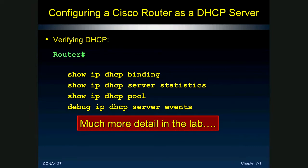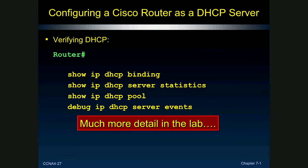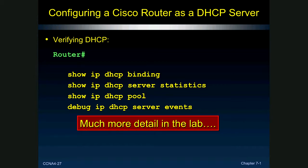To verify DHCP operation: 'show ip dhcp binding' shows all addresses currently assigned to clients; 'show ip dhcp server statistics' shows percentage-based stats on server operation; 'show ip dhcp pool' shows the actual address pool. The 'debug ip dhcp server events' command will print a line to the console each time a DHCP event occurs, but debug is dangerous — it consumes significant system resources and reduces router efficiency. Best practice: only enable debug for a limited time to troubleshoot a problem, then turn it off with 'no debug'. In a production network, too many debugs can actually crash the router.